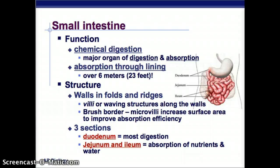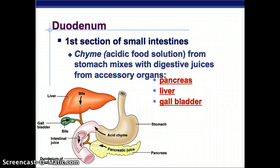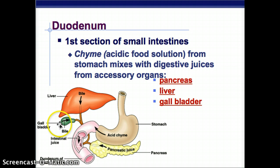The small intestine is broken into three sections. The duodenum does most of the digestion — the actual breaking down. Then the jejunum and ileum are where most of the nutrients and water are absorbed. The duodenum is perhaps the most important because it has all these accessory organs attached to it. You get that chyme from the stomach — that acidic food solution — and it mixes with digestive juices from the accessory organs. Bile is made in the liver, stored in the gallbladder, and comes into the small intestine, and these all work together to digest food in the duodenum.